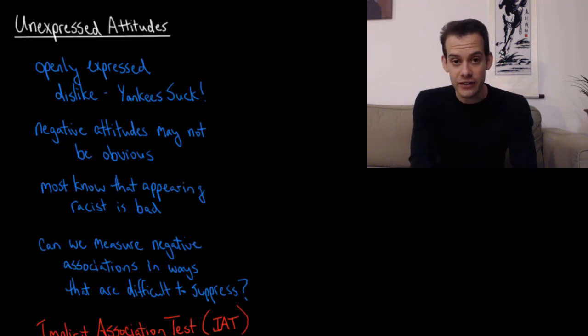So if you have negative evaluations of a particular racial group, you might try to hide those evaluations, you might try to hide those attitudes from others. And this means that it's difficult to assess whether or not people have negative attitudes about certain groups, or how strong those attitudes are, or whether people have actually gotten better at reducing these negative attitudes, or if people have just gotten better at hiding them.